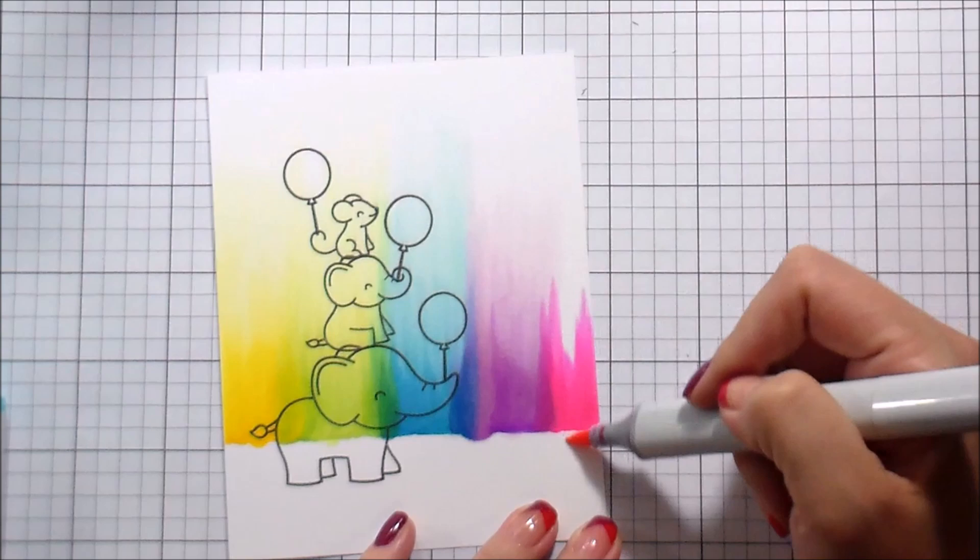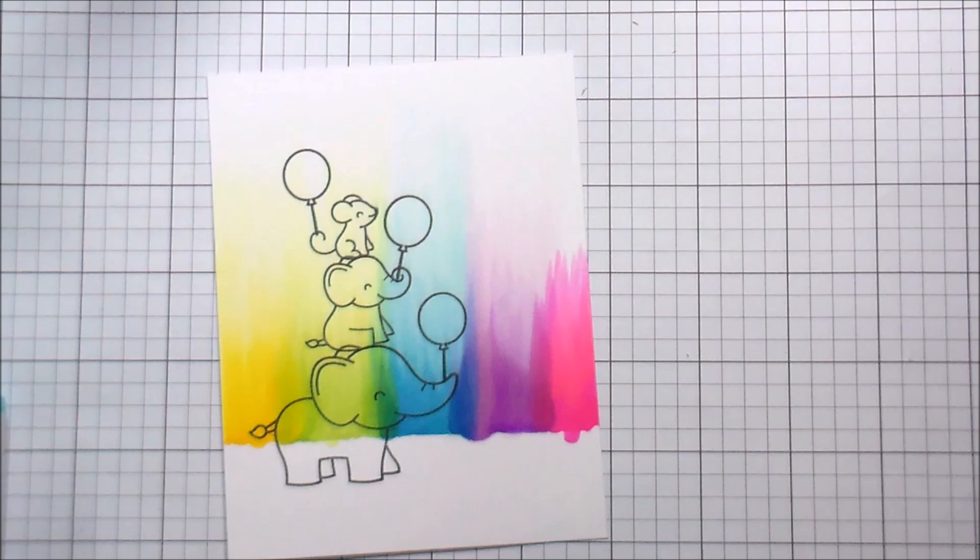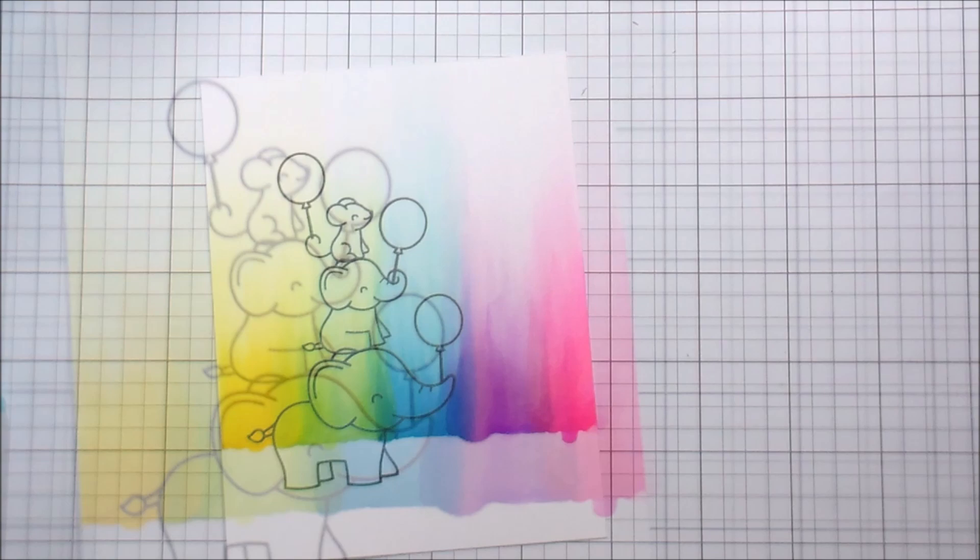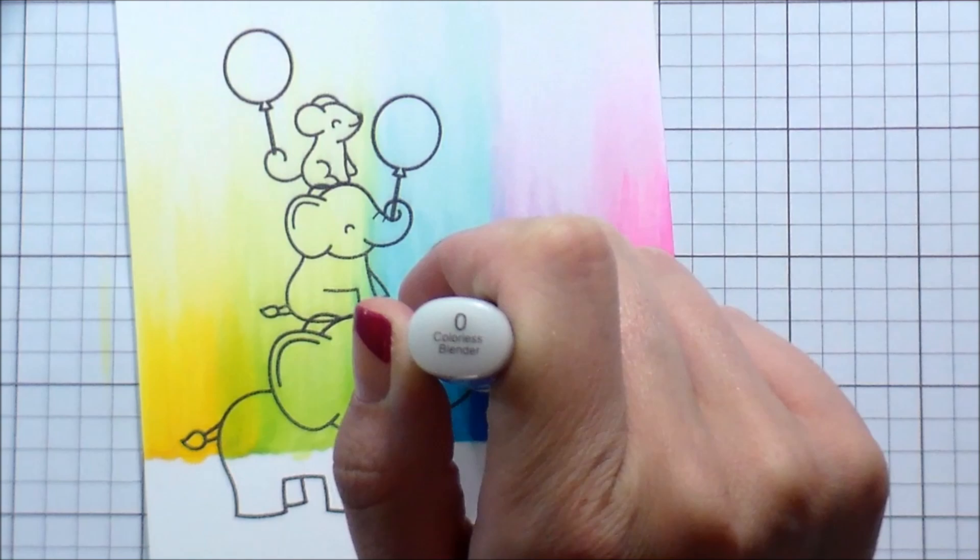And it's fine because we're doing a colorless blender technique. So I already have that thing handy to fix any of my mistakes. So here with the RV04 is a really bright color, but the RVs are very interesting because when you put them on top of each other, when you put an RV02 on top of an RV04, it really lightens up the color.